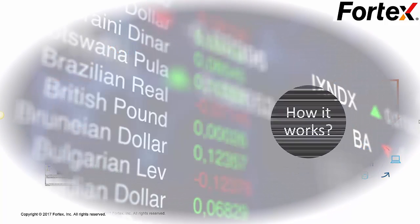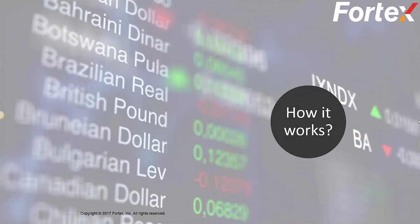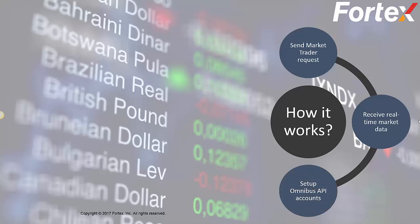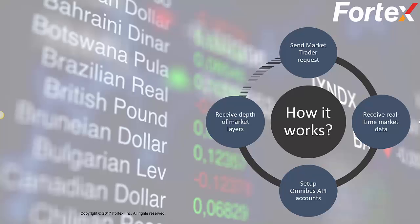Using the FIX API, your clients can build secure automated FX trading into their proprietary systems. Using FIX API you can send market trade requests, market open, market close, receive real-time market data, set up omnibus API accounts, and receive depth of market layers. The FIX API library is dynamically linked to the client's computer system and allows communication directly with Fortex FIX trade server in NY4 over a secure authenticated internet session with fully encrypted communication channels.